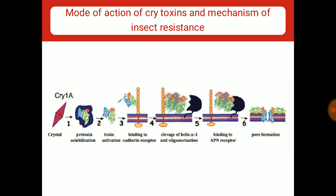This cleavage exposes previously buried hydrophobic regions and triggers the formation of a tetrameric oligomer structure. Is oligomeric structure ki affinity second receptor se kaafi zyada hoti hai. Yeh second receptor facilitate karta hai insertion of the oligomer into the membrane, jisse pore form hota hai, that leads to cell disruption and ultimately insect death. Bahut saare insects mein cry toxins ke against resistance develop ho jaata hai, by blocking any one of the steps in this complex mechanism of action. Most common mechanism of resistance reported until now involves mutations in the cadherin gene.